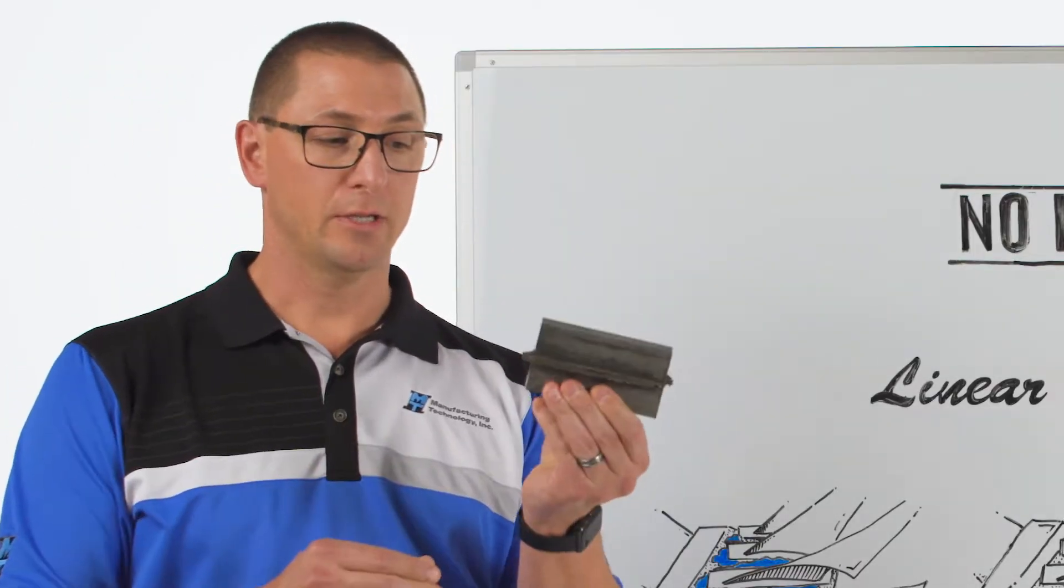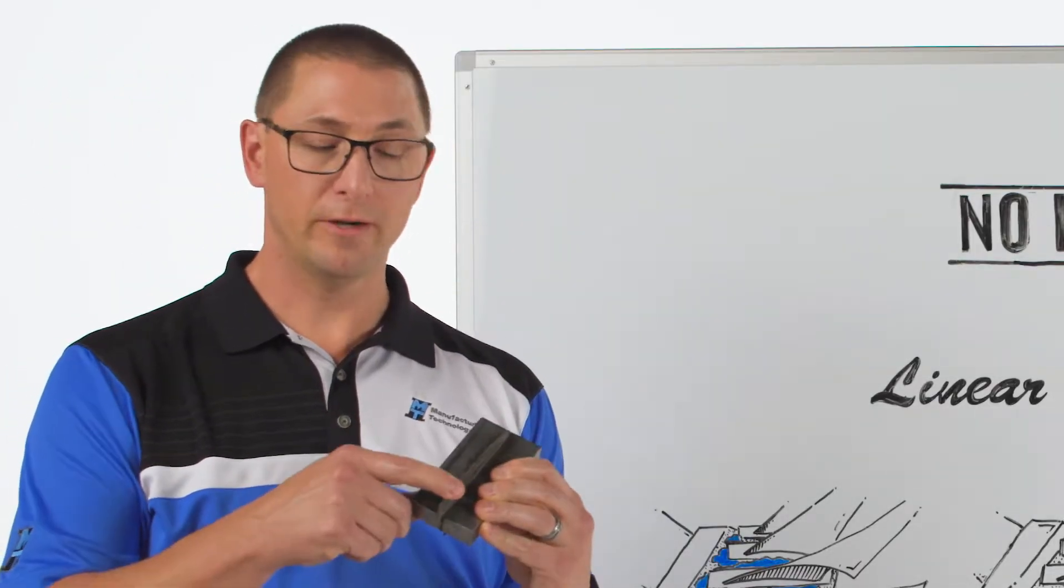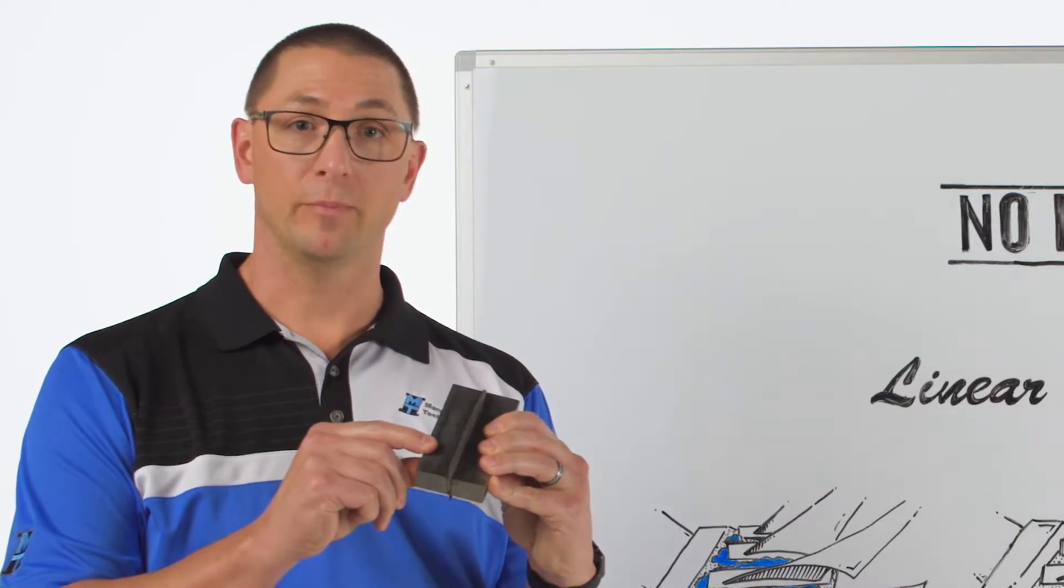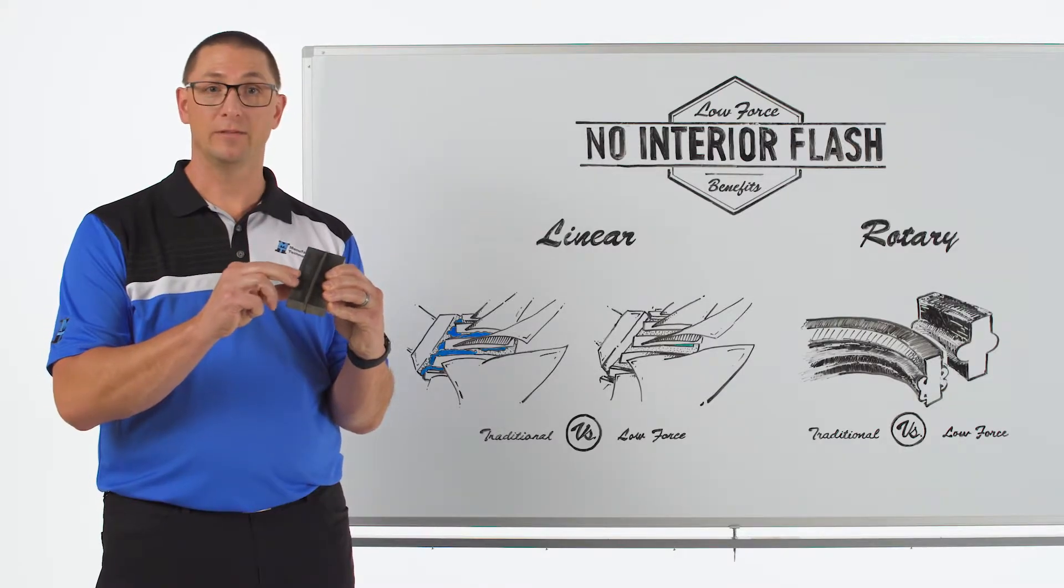This flash ribbon is shown here on this coupon weld. It's very rigid and it's very sharp. That's what makes it very difficult to remove.